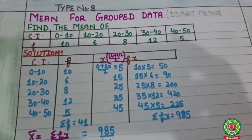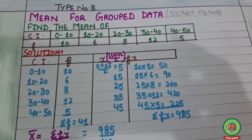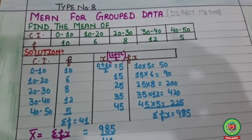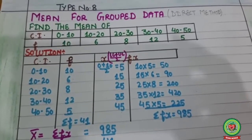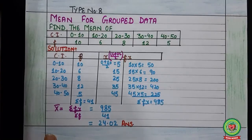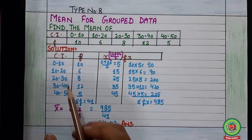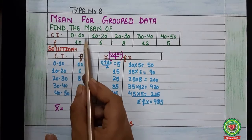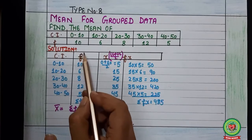For solution, children, we will draw four columns. In the first column we will write class interval from statement as it is. In the second column we will write frequency from statement.